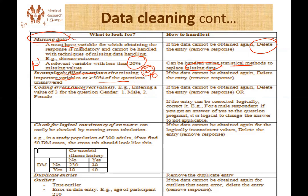The other issue is coding errors or incorrect values. Sometimes when data encoders enter data, they might type an incorrect value. For example, for gender coded as one and two for male and female, if we get a value of three or four, we go back to the original data source if accessible. We can also use logic — for instance, if a male respondent answers yes to a pregnancy question, we can logically correct the pregnancy status to 'not applicable.' But if logic doesn't apply and we cannot access the primary source, we have to remove that data entry.